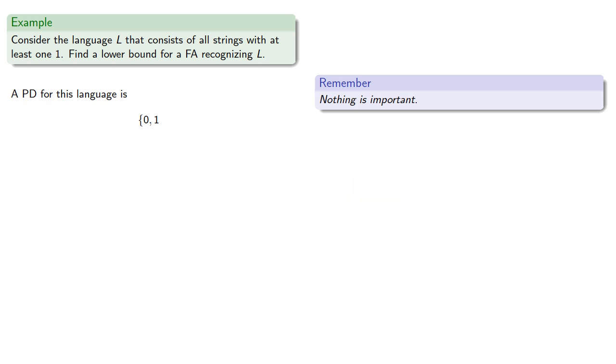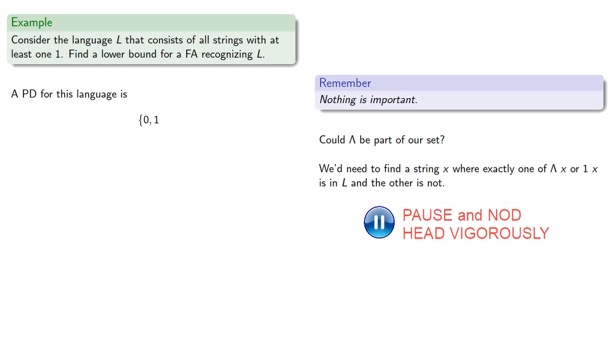Could our empty string be part of our set? So we need a string x where exactly one of empty x or 1x is in L and the other is not. Since 1x is definitely in L, then we need lambda x, which is just x, to be not in L.